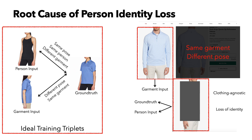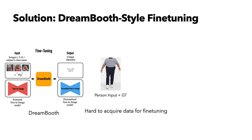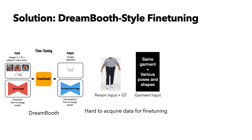However, this representation not only removes the ground truth garment, but also removes the person's identity like body shape or muscle structures. To tackle this issue, we propose to use DreamBooth-style fine-tuning, so that the fine-tuned model can memorize the identity of our target subject. However, there are two challenges for the fine-tuning. The first challenge is it is really hard to acquire the fine-tuning dataset. For person input and ground truth, we can directly utilize the target subject. But for garment input, we would like to have different people of various poses and body shapes wearing the same garment as the target subject. In practice, it is really hard and expensive to collect this type of data. The second challenge is that fine-tuning the whole model like DreamBooth did will lead to overfitting and inefficiency.